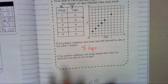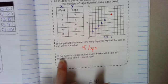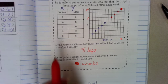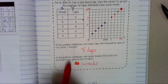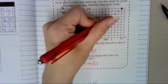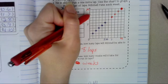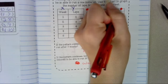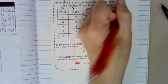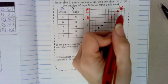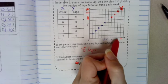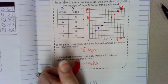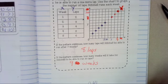Alright, if the pattern continues, how many weeks will it take for Mitchell to be able to run 10 laps? So if we are looking for how long it will take him to run 10 laps, this right here was 8 laps. So 8, 9, 10. This here would be 10 laps. How long would it take him to run those 10 laps? This is 7 weeks, 8 weeks, 9 weeks. So it would take him 9 weeks to run 10 laps.